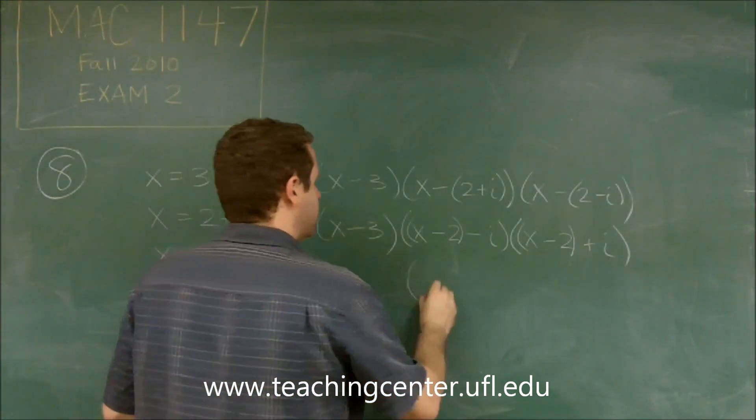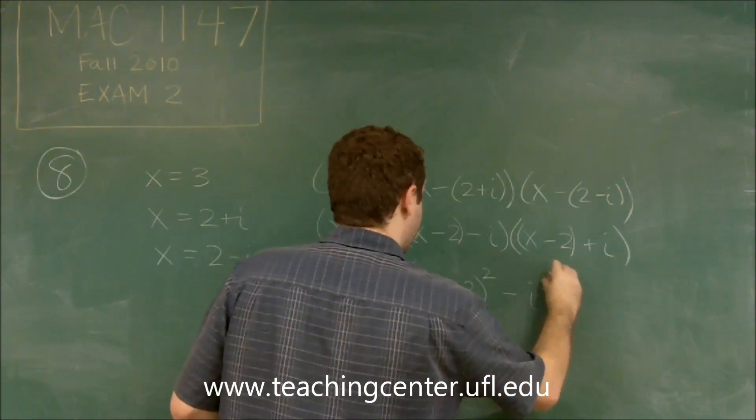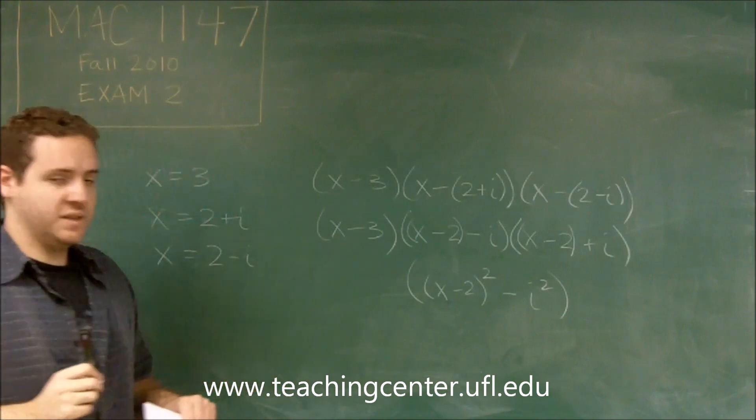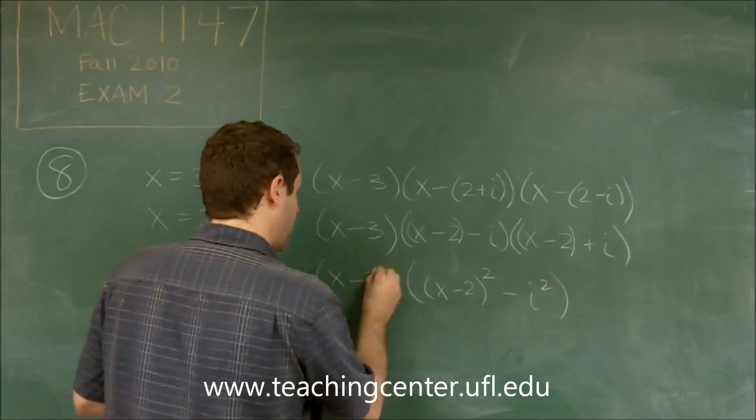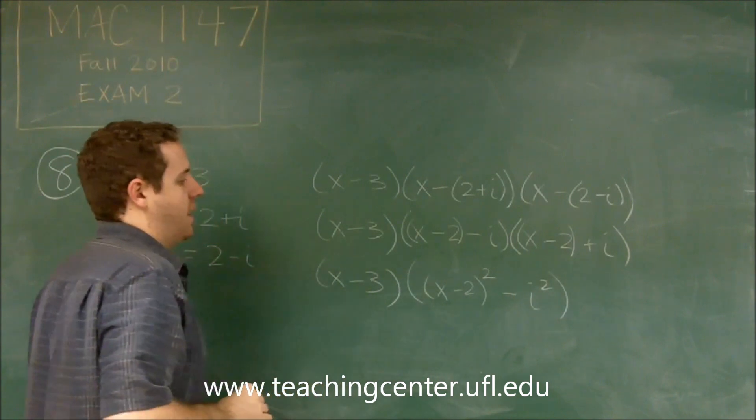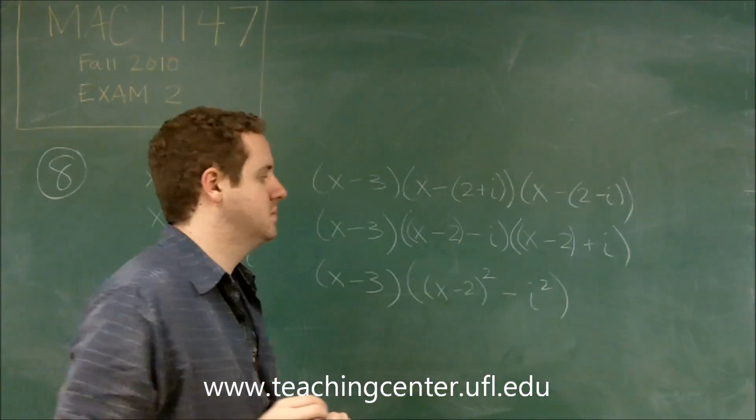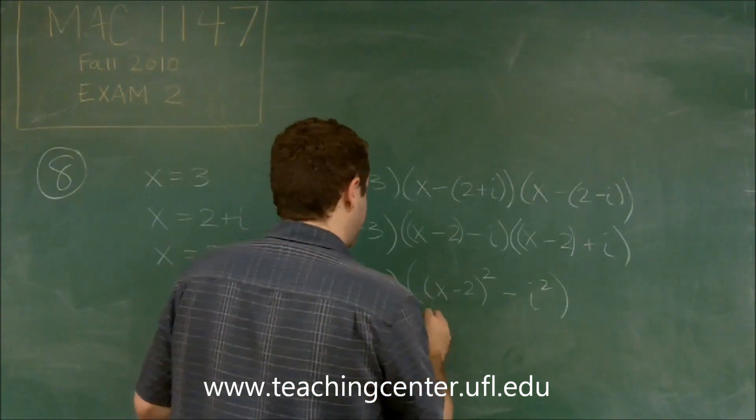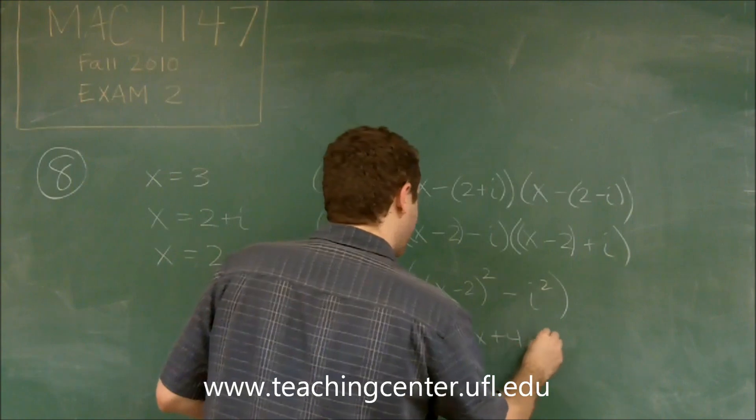So here, this is x minus two squared minus i squared using the difference of two squares. So minus, subtracting i squared is the same thing as adding one. So we can expand this. So this is x squared minus four x plus four plus one.